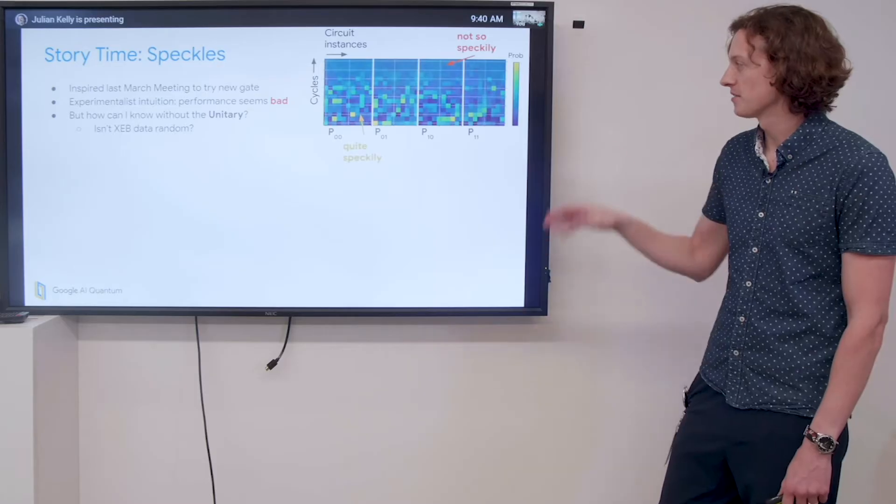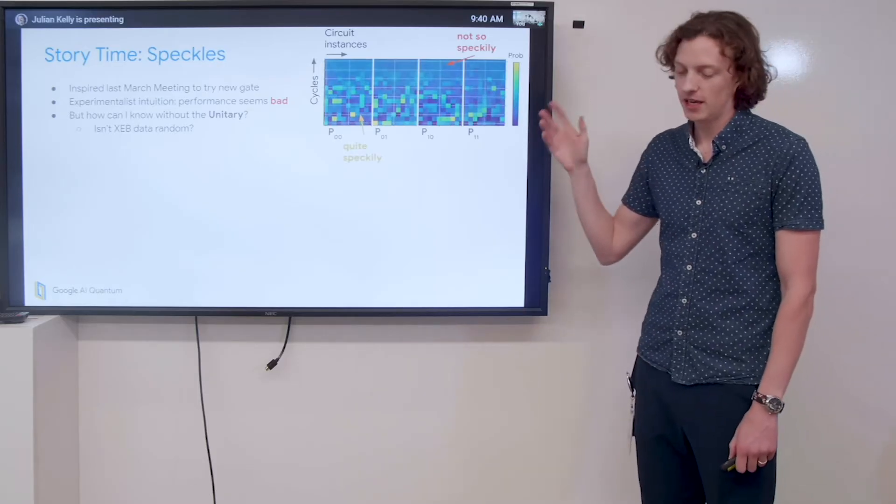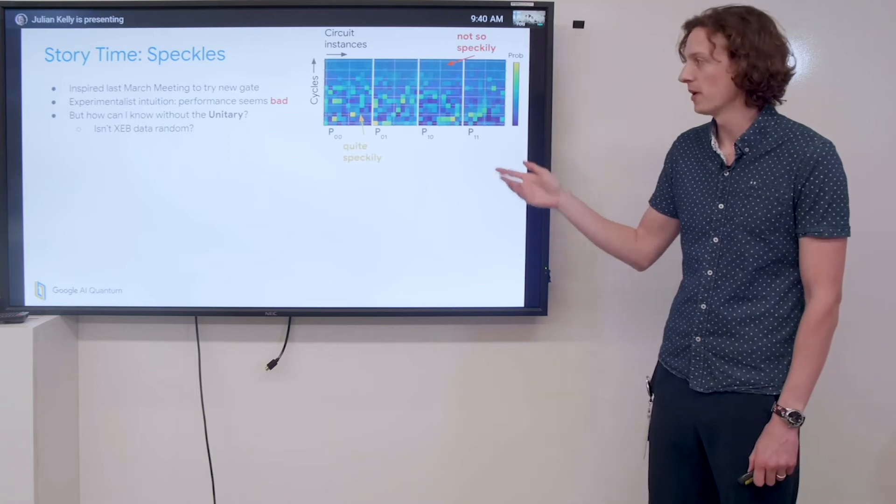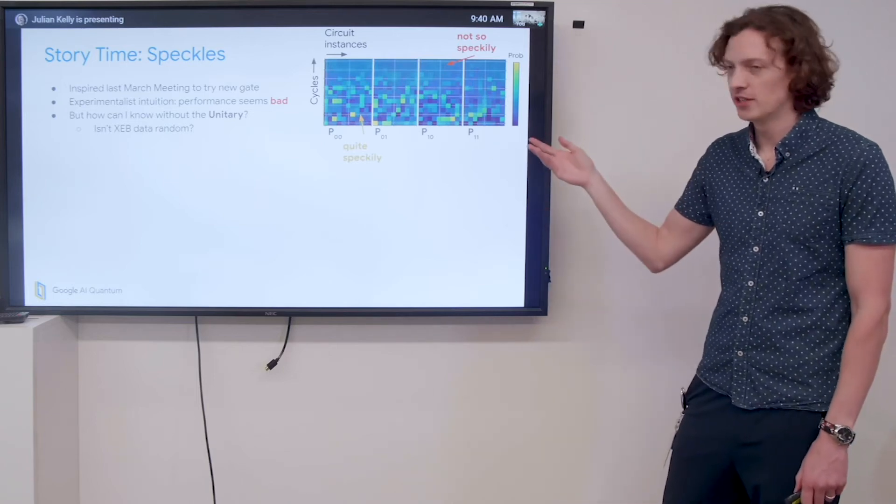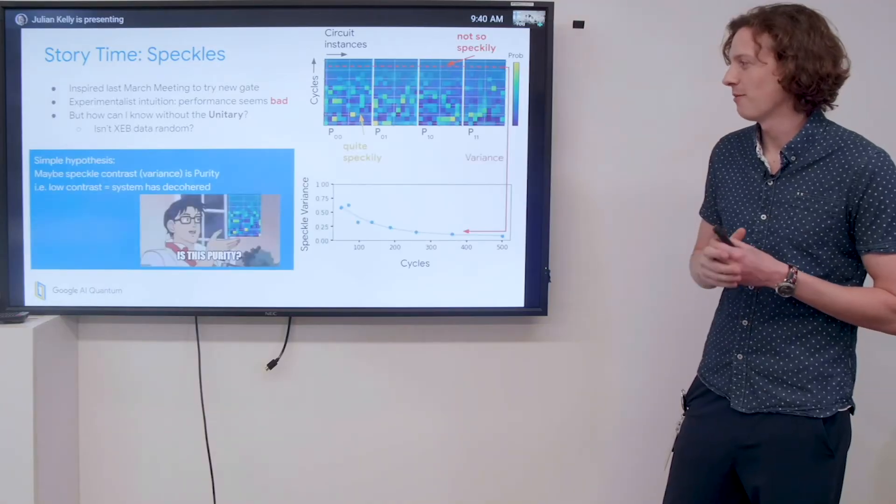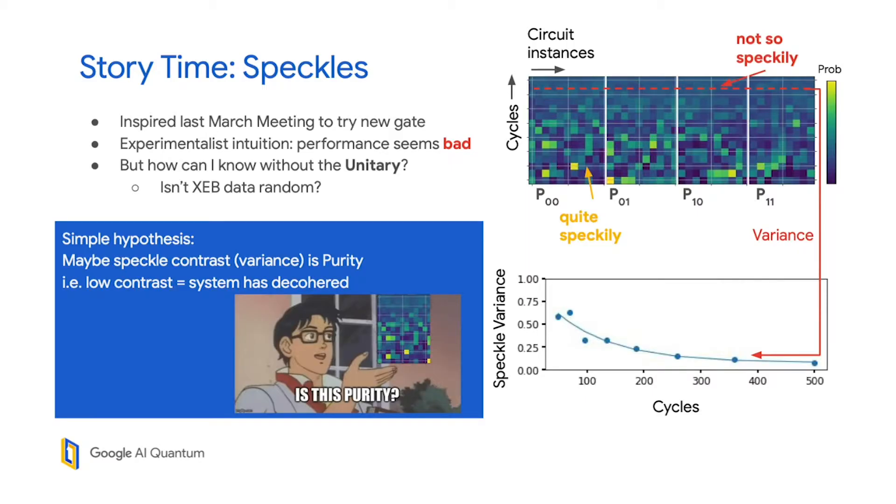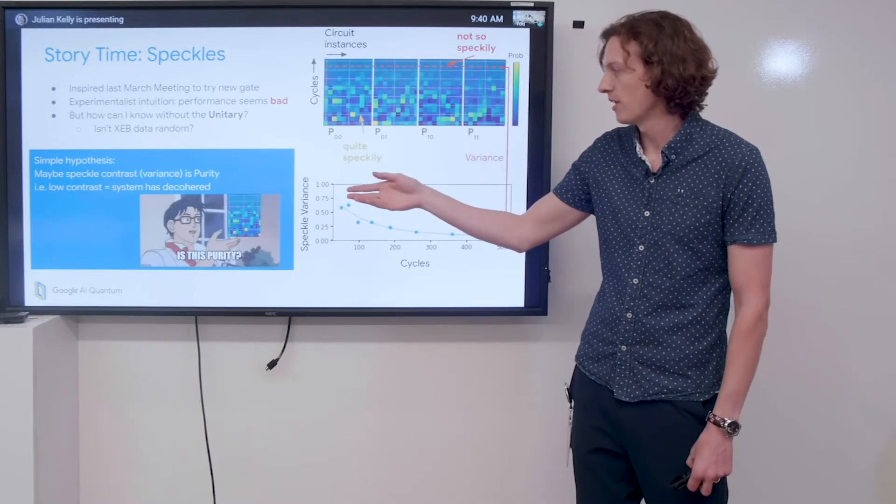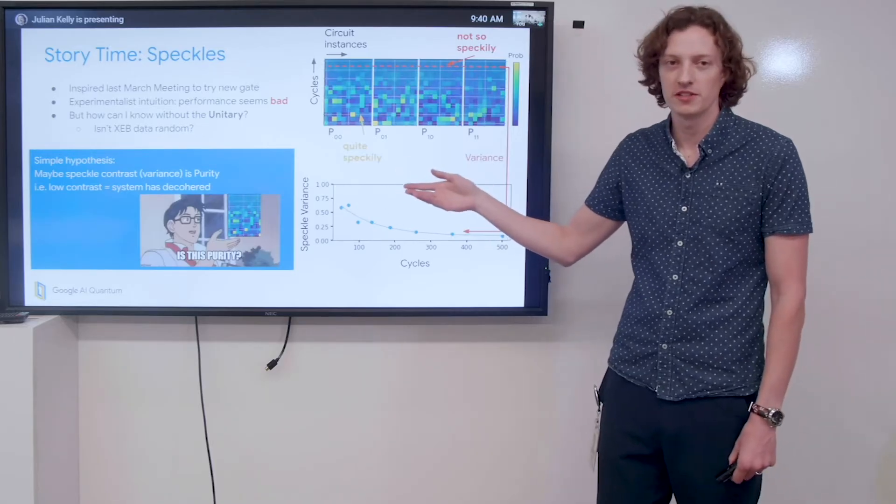I was thinking about this a bit more. This is pretty interesting, because I'm looking at the data and assessing the quality somehow, but I don't even know what unitary I've been actually performing. Shouldn't the XEB data just be completely random? So I formed an extremely simple hypothesis: maybe this speckle contrast is actually telling us something about the purity. In some sense, if there's low contrast, it's telling us that our system has decohered in some way.